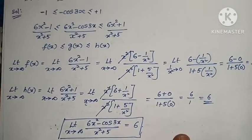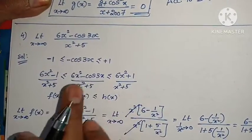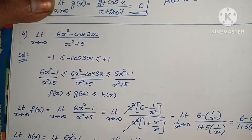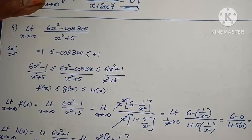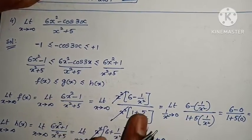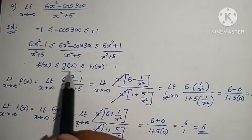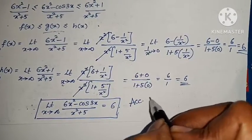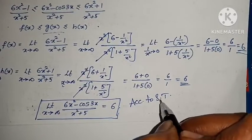The problem is complete and very simple. We choose the highest and least trigonometric values, set up the inequality, then apply the Sandwich theorem: since f(x) limit and h(x) limit are both 6, g(x) limit is also 6.